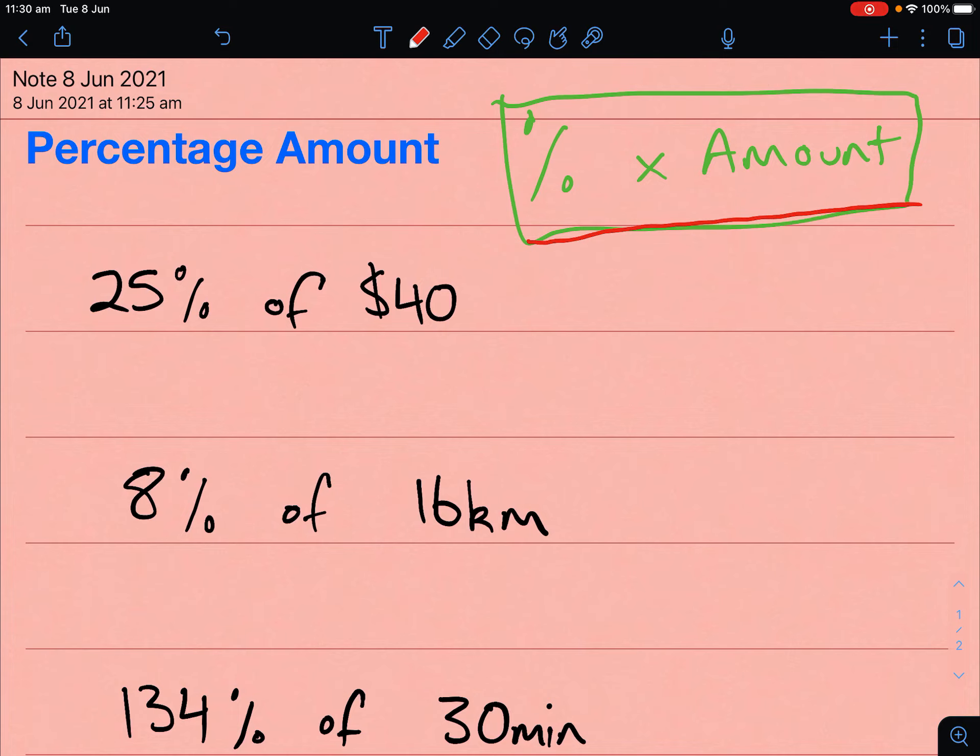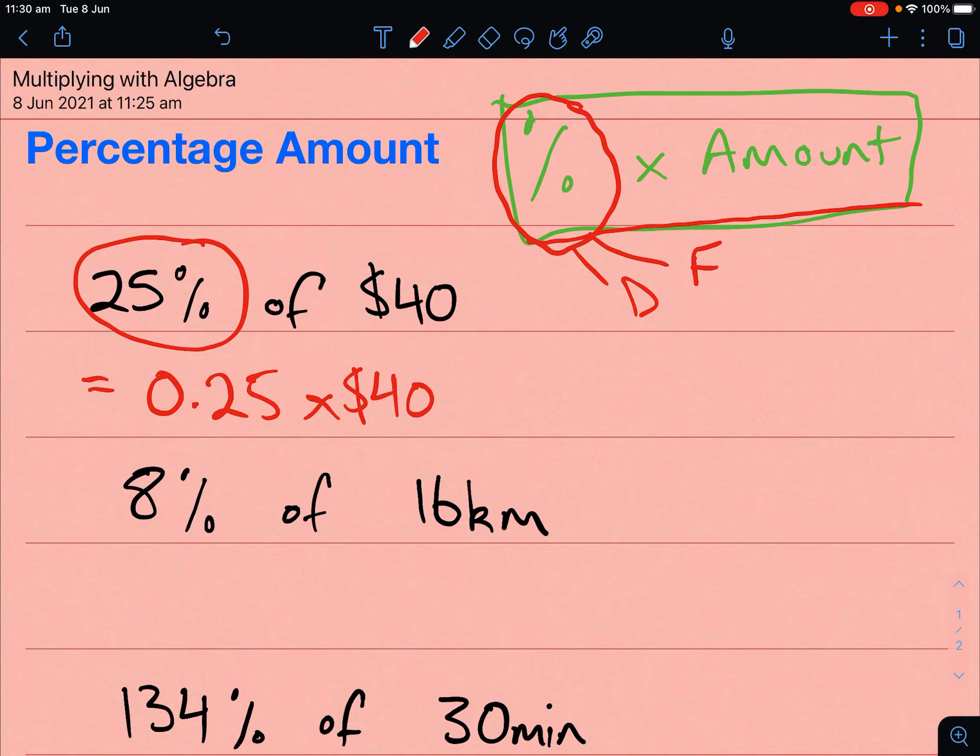There are lots of different ways of doing this. We're going to show you one way today, and this way involves using your calculator. When you're putting it into your calculator, you need to change that percentage into either a fraction or a decimal. Let's do the first one as a decimal. So 25% would be 0.25, and then we just multiply that by the $40. If we do that we get an answer of $10, so 25% of $40 is $10.